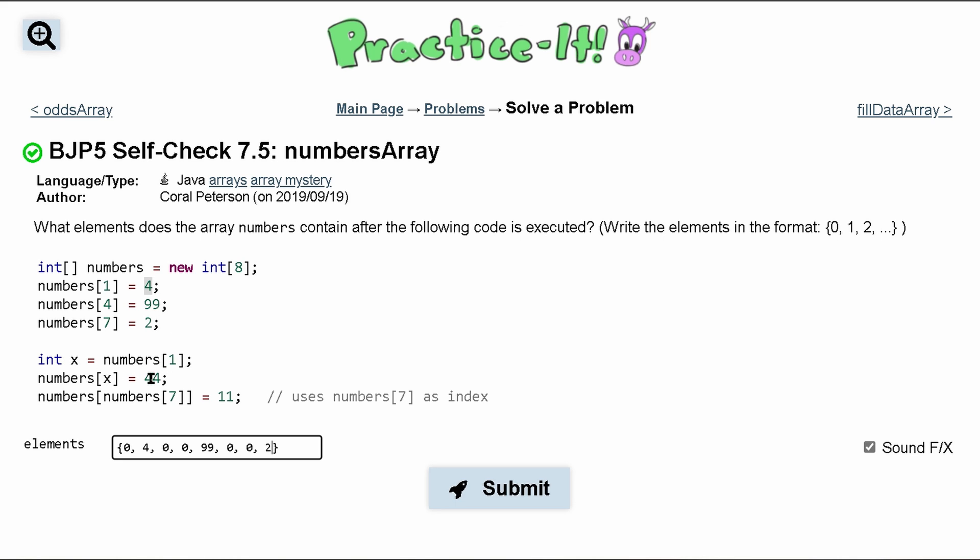So numbers[4] is equal to 44. So index four is equal to 44. Zero, one, two, three, four. That means you're going to replace 99 with 44.